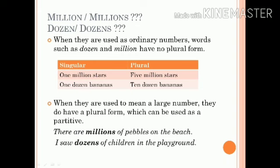Here is an interesting thing. Which one is correct: 'million' or 'millions', 'dozen' or 'dozens'? When these words are used as ordinary numbers, they have no plural form. In singular: 'one million stars' and 'one dozen bananas'. In plural: 'five million stars' and 'ten dozen bananas'. When they are used to mean a large number, they do have a plural form used as a partitive. For example: 'There are millions of pebbles on the beach' and 'I saw dozens of children in the playground.'